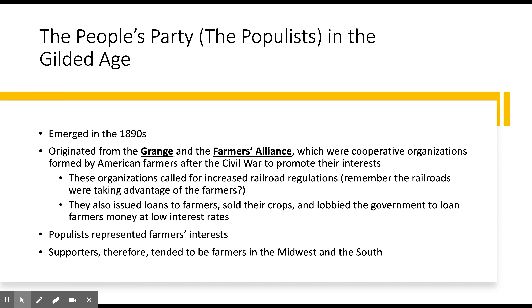The People's Party, also known as the Populists, emerged as a major political force in national politics in the 1890s. The party found its roots in cooperative organizations that American farmers had formed after the Civil War, especially the Grange and the Farmers Alliance. These organizations called for increasing railroad regulations, issued loans to farmers, sold their crops, and lobbied the government to loan farmers money at low interest rates. The Populist Party was especially popular in the Midwest and the South, where many farmers lived.